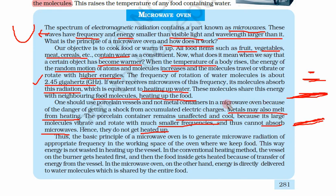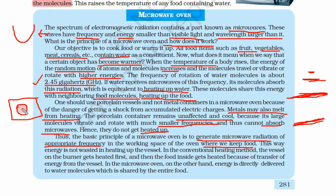The basic principle of a microwave oven is to generate microwave radiation of appropriate frequency in the working space of the oven where we keep the food — inside, not outside. This way energy is not wasted in heating up the vessel. In conventional heating methods, the vessel on the burner gets heated first and the food inside gets heated due to energy transfer from the vessel. But in the microwave, energy resonates directly with the water.